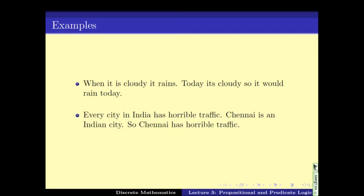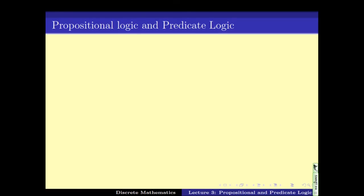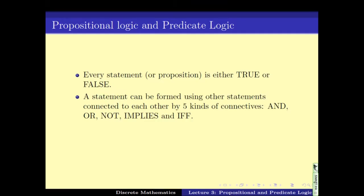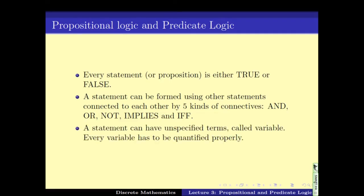So formally speaking, in propositional logic and predicate logic, we say that every statement or proposition is either true or false. This statement can be composed of other smaller statements and they can be connected using five different kinds of connectives: AND, OR, NOT, IMPLIES, and IF AND ONLY IF. A statement can have unspecified terms called variables, and each variable has to be quantified properly.